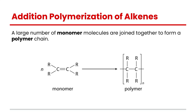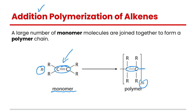In this video we are going to take a look at one more type of addition reaction, and that is the polymerization of alkenes. So if you have a large number of alkenes — in this case they're called monomers — they can be joined together through an addition reaction. The carbon-carbon double bond is reacting and breaking, joining these monomers together n number of times to create a polymer chain.